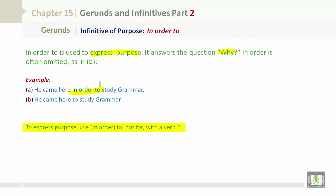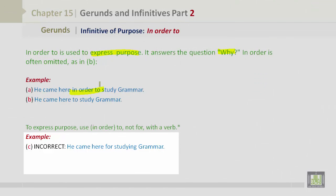To express purpose, use in order to, not for with a verb. Now let's look at some incorrect examples. He came here for studying grammar. He came here for to study grammar. He came here for study grammar. All of these examples are incorrect.